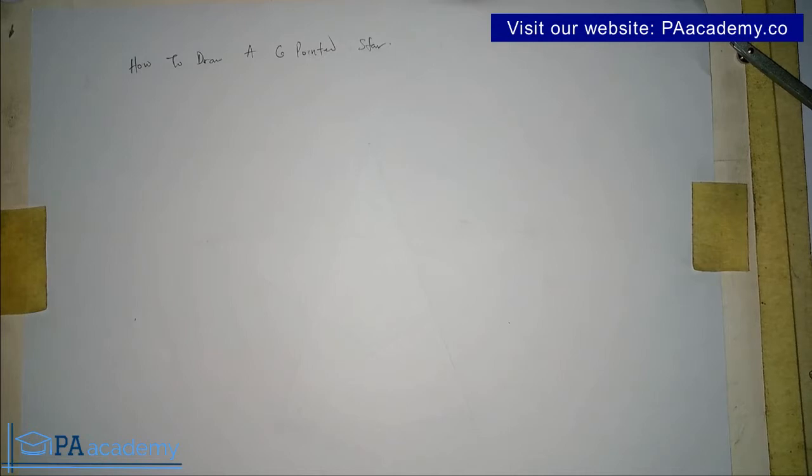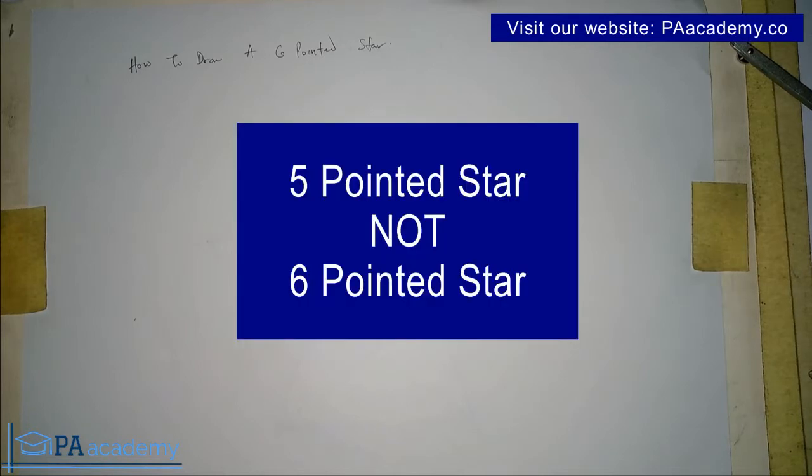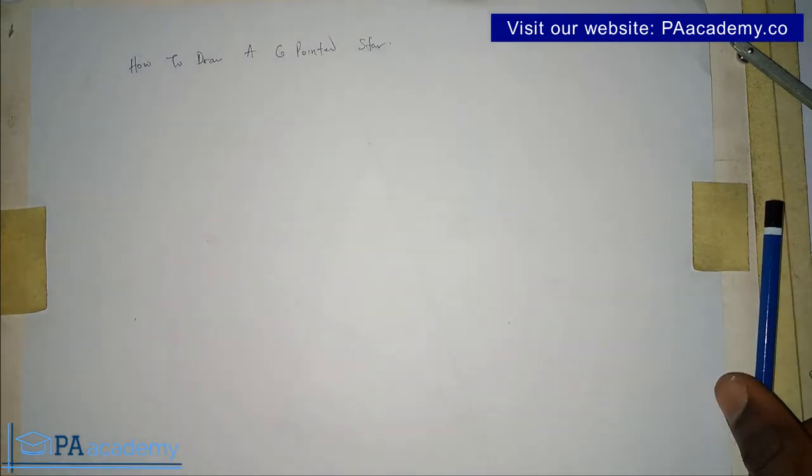If you missed the previous part of this video that talks about how to draw a 5 pointed star I will leave a link to that video in the description of this particular video. Alright, so to start with what we are going to do now is to first of all get the points that the vertex for the star and in doing that you are going to be drawing a hexagon, a regular hexagon.